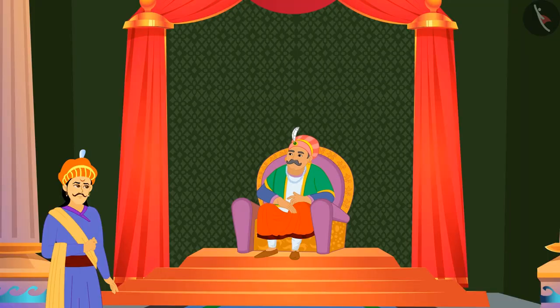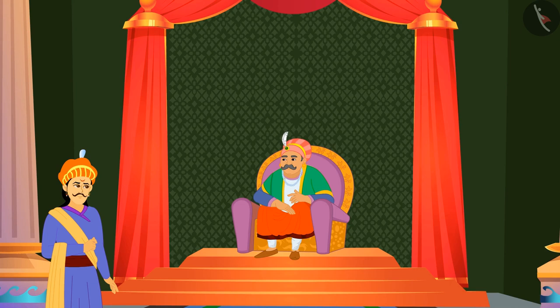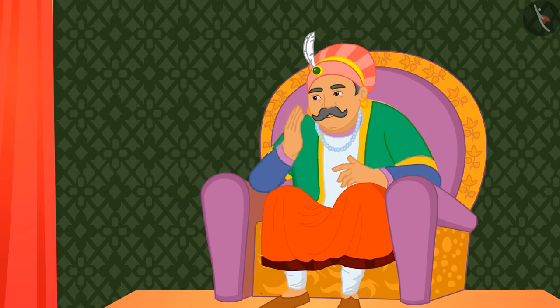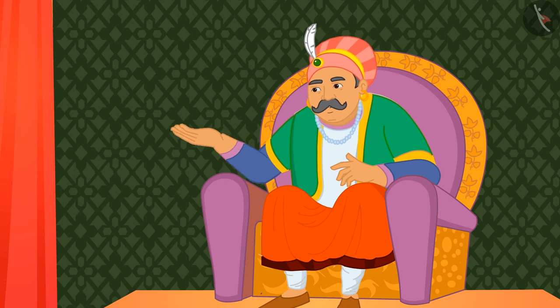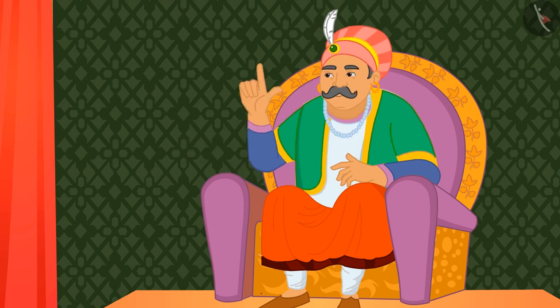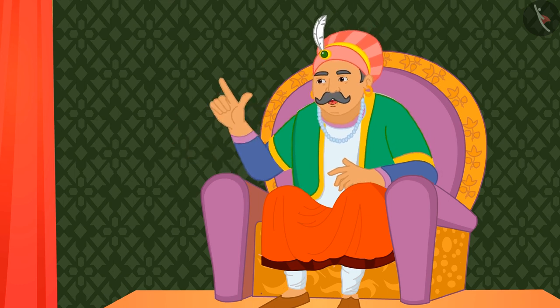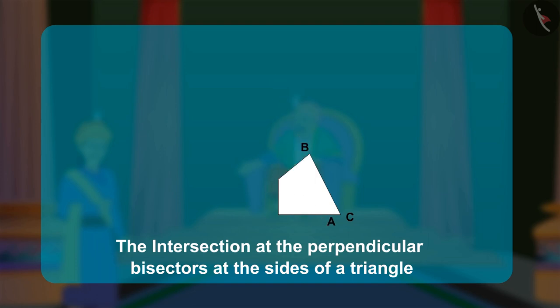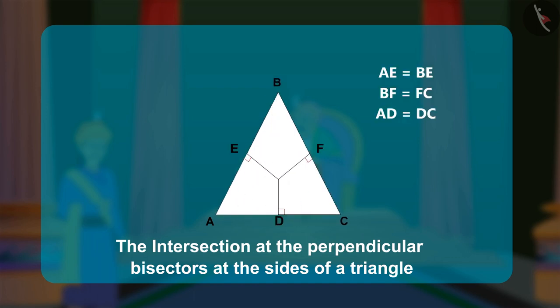Akbar was impressed, but wanted to test Birbal further and asked, how will you show the intersection at the perpendicular bisectors of the sides of a triangle? Again, Birbal folds the paper so that the perpendicular bisectors of each side of the given acute triangle can be formed.